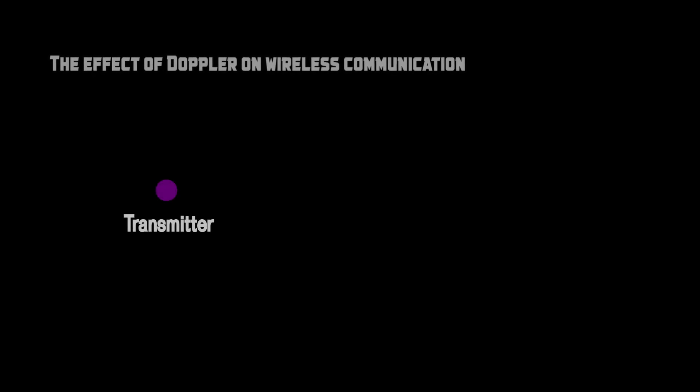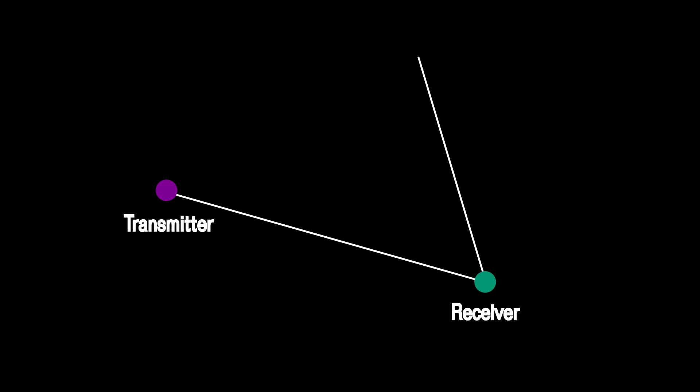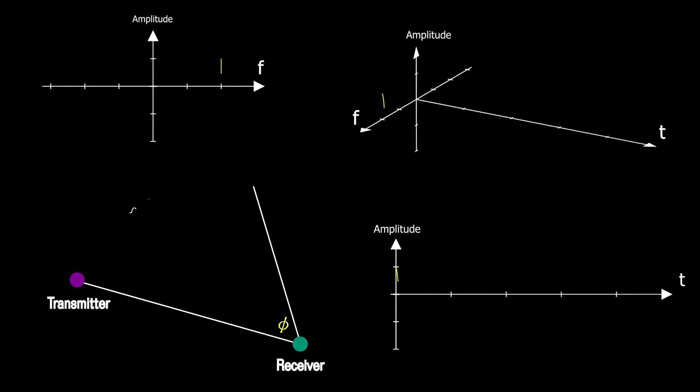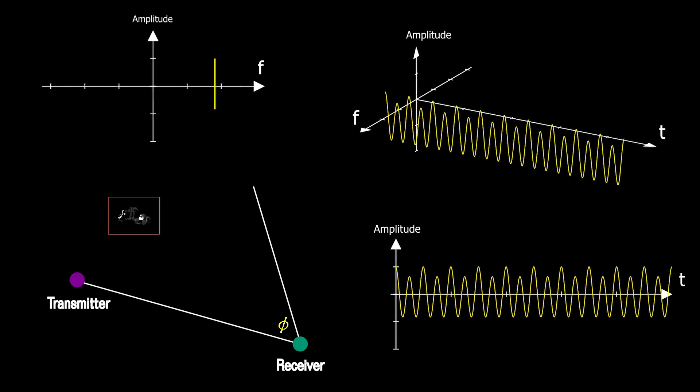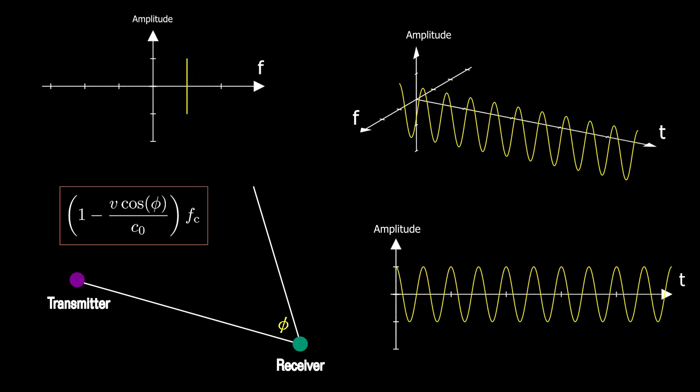Now we're going to see the effect of Doppler in wireless communication. Let's talk about a simple case in which there is a static transmitter and a receiver moving with velocity v. The angle of arrival of the wave relative to the direction of motion of the receiver is phi. If the transmitted wave is purely sinusoidal with frequency f, the receiver will feel a sinusoid with a Doppler-shifted frequency.